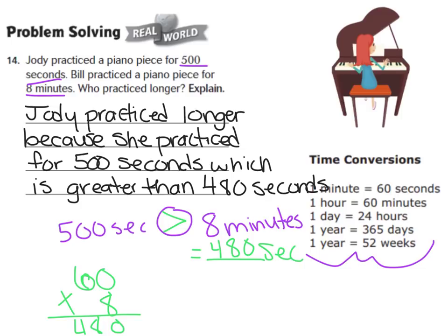All right, let's check our answer. When we compared 500 seconds to 8 minutes, we should have changed 8 minutes to seconds, which means we multiply 60 seconds times 8. Well, 60 times 8 is 480, so 8 minutes is equal to 480 seconds. We can see that 500 seconds is greater than 8 minutes. So Jody practiced longer because she practiced for 500 seconds, which is greater than 480 seconds, which was Bill's time.